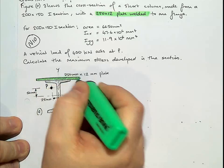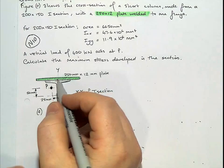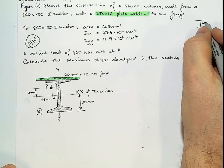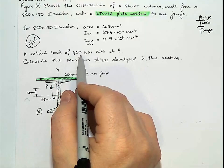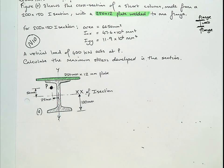So there's a plate welded to the top there. It says that it's welded to one of the flanges. In terms of an I-beam, the middle part is called the web, the top is called the flange, and the bottom is also called the... We've got a vertical load coming down 400 at P. Calculate the maximum stress developed in this section.